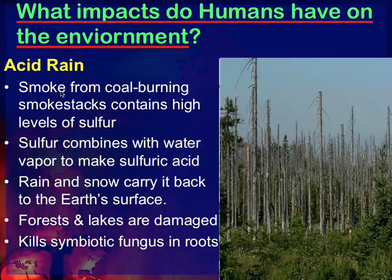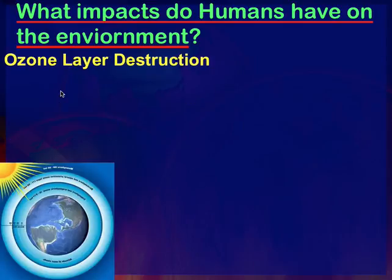Acid rain is something we're trying to control. We use something called scrubbers in our smokestacks to prevent some of these gases from getting out. So we're aware of the problem and we're trying to control it, but it still is a problem.